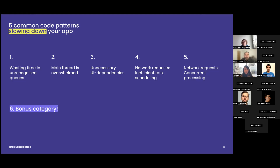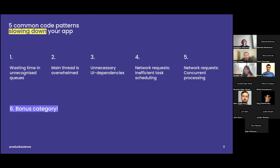Thank you, Scarlett, for the great introduction. At Product Science, we have extensive experience optimizing mobile apps across different platforms and industries. Throughout this experience, we see that the most common reasons for apps to slow down — to have any kinds of delays — repeat from app to app, regardless of platform or language. Today we're going to cover five code patterns, and one bonus category, that are most commonly causing delays. We find them not only common, but impactful and actionable — you can not only find them, but fix them and make significant improvements to make your apps run faster.